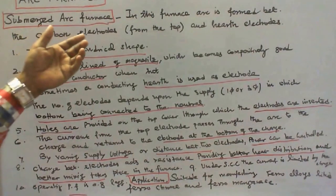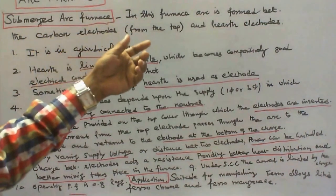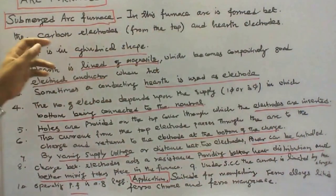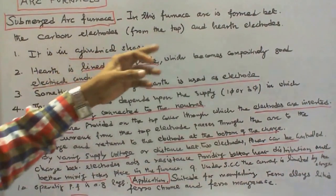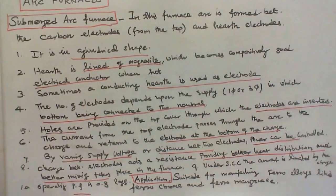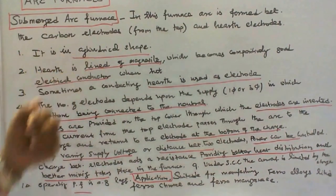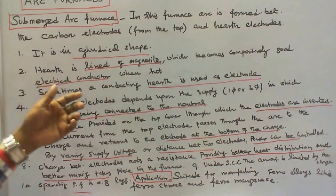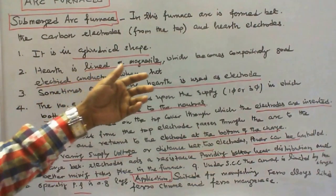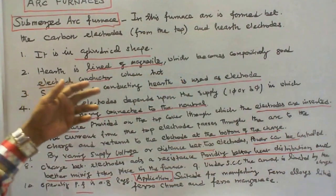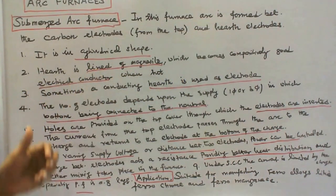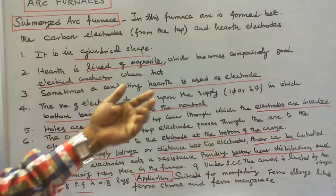Submerged arc furnace. In this furnace, arc is formed between the carbon electrodes and earth electrodes. It is in cylindrical shape. The earth is lined with magnesite, which becomes comparatively good electrical conductor when hot.